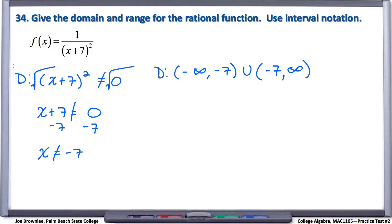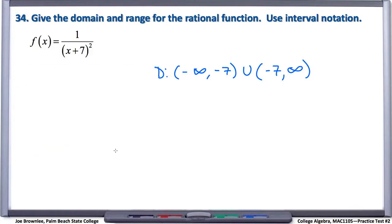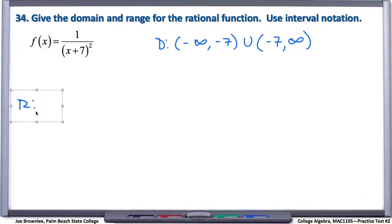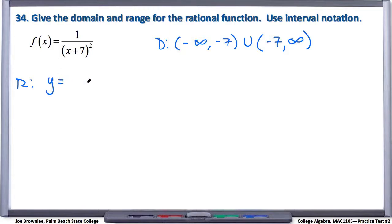Now let's find the range. Range refers to the permissible values of y — what y values are we allowed to use with this function? Just like in number 33, you can find the range graphically using the calculator, but I like to find it analytically first and then confirm on the calculator. So starting with y equals 1 over quantity x plus 7 squared, let's solve for x.